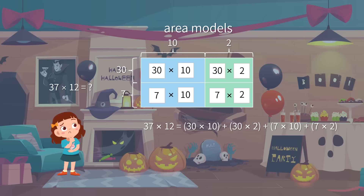The remainder of the work is simply doing easy multiplication and addition. The product of each term are 300, 60, 70, and 14, respectively. And we add them together. Thus, the final product of 37 times 12 should be 444.